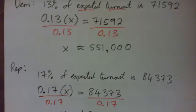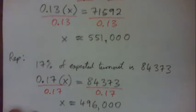Yeah, try again. If you divide by 0.17, you should get 496,000.